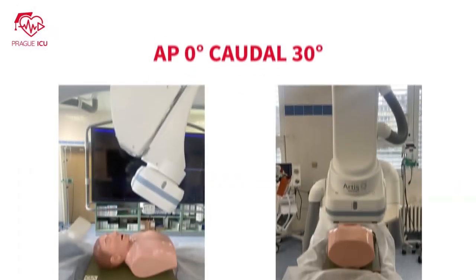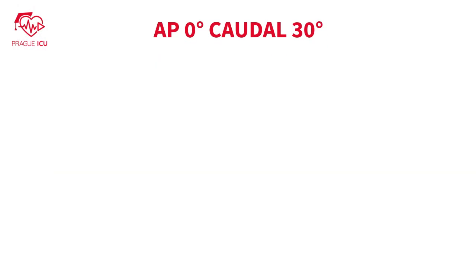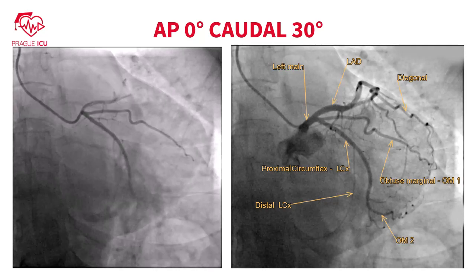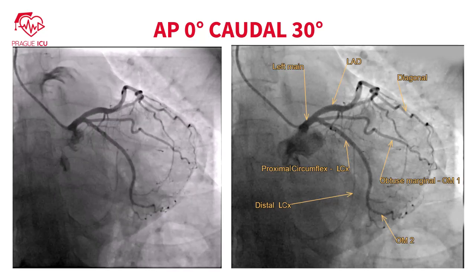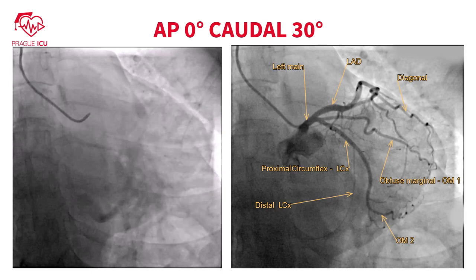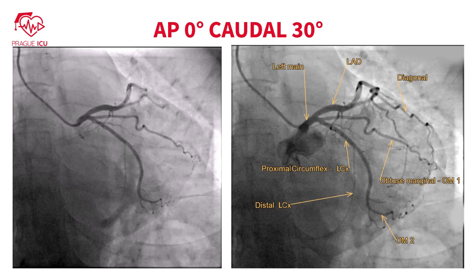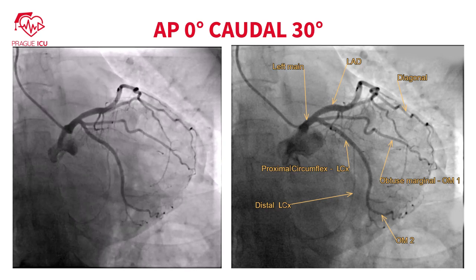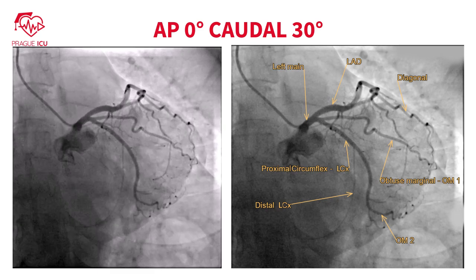AP 0 degrees caudal 30 degrees view is best for visualizing proximal circumflex and circumflex obtuse marginal bifurcations. Circumflex is usually tiny. All branches go to the right side of the image towards the LAD. Circumflex heads always towards the coronary sinus.